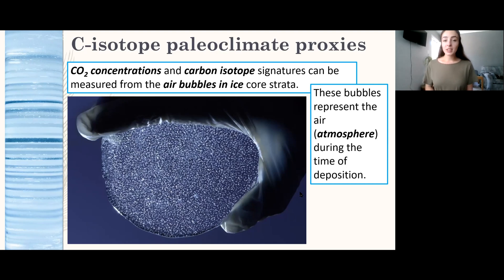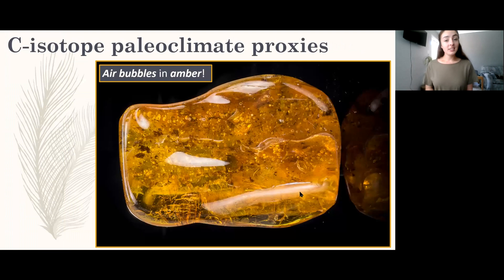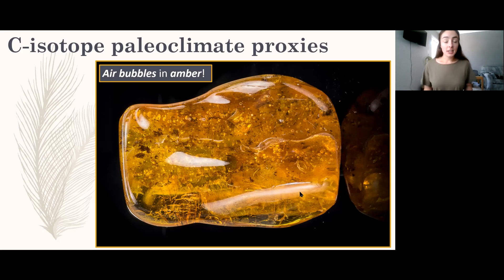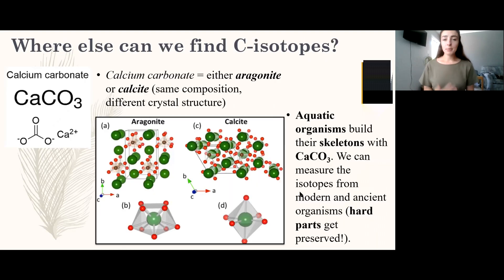Additionally, there are air bubbles in amber. Amber does an amazing job at preserving fossilized insects or feathers, but air bubbles in amber could be just as important. Amber can go back a very long time in Earth's history, so we can use these air bubbles in ancient amber to understand a lot about the ancient atmosphere and how it evolved.